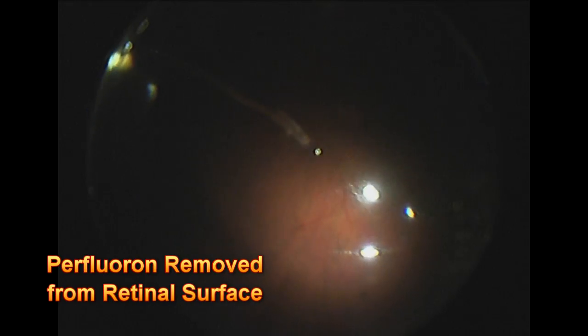Air fills the eye and you'll see the perfluoron meniscus disappear because the pressure of the air flattens out the meniscus. The silicone tipped extrusion needle is used to drain the fluid from around the retinal tear, and now that the retina has been flattened out both anteriorly and posteriorly, the eye is filled with air as the perfluoron and intraocular salt solution are removed using the silicone tipped cannula.